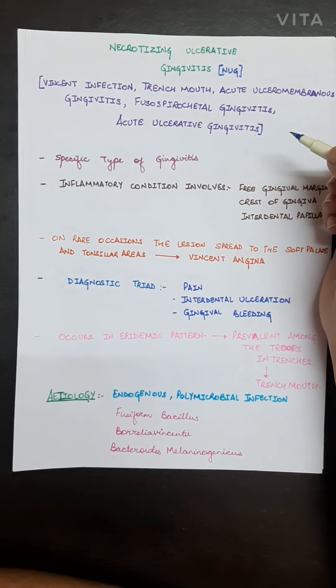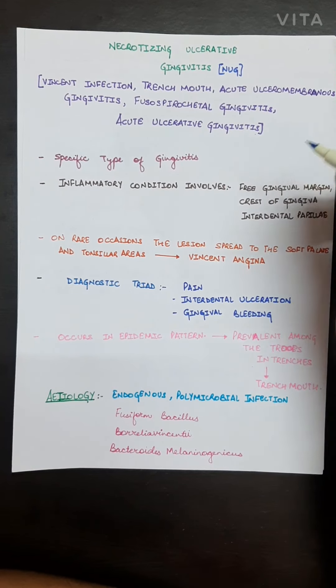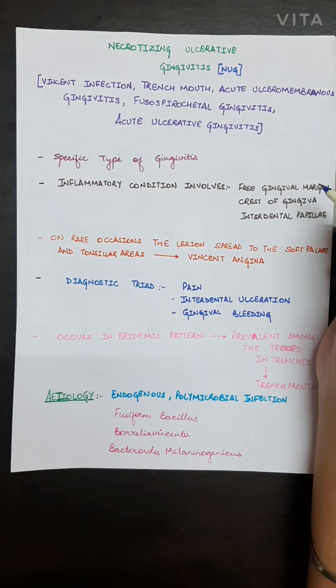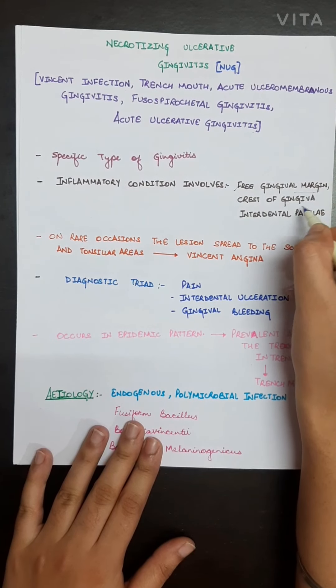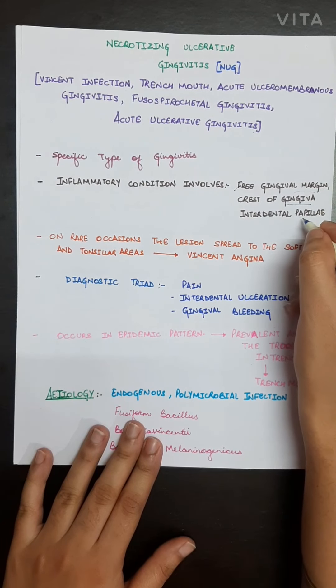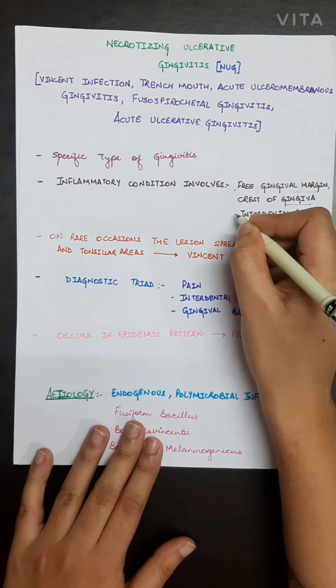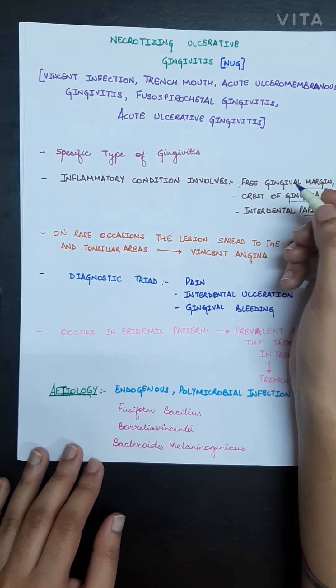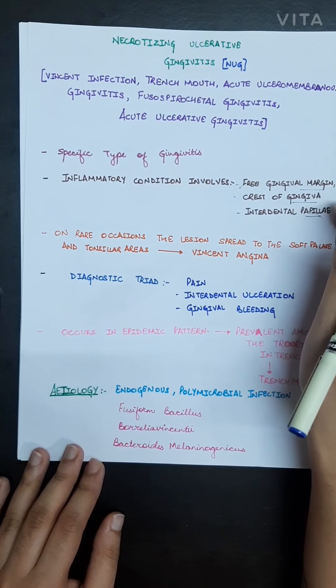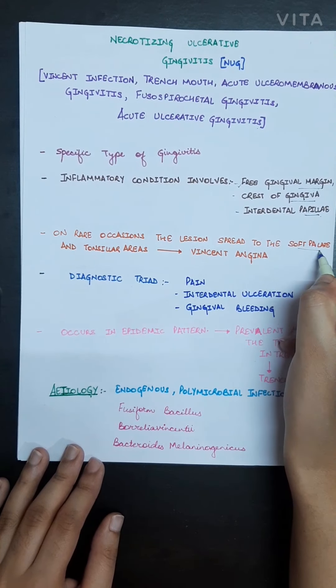It is basically a specific type of gingivitis in which inflammatory conditions involve the free gingival margin, crest of gingiva, or interdental papilla. As it is a disease of gingiva, on rare occasions the lesion spreads to the soft palate and tonsillar areas.